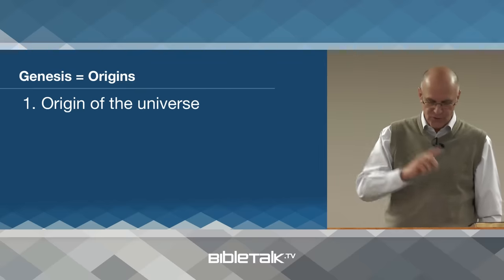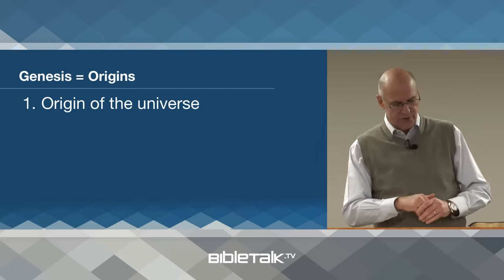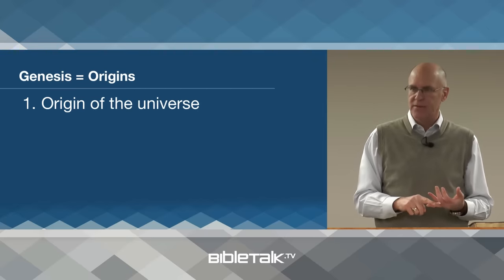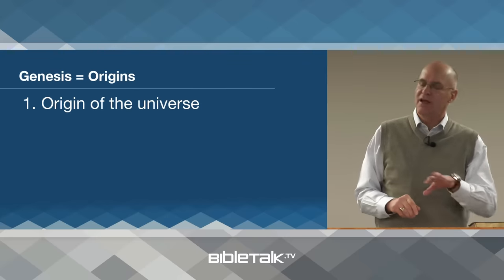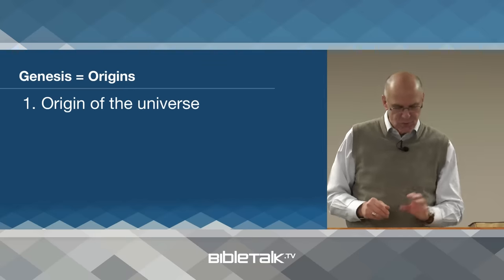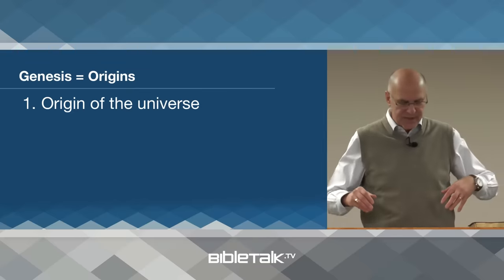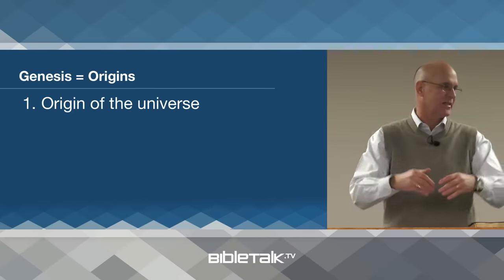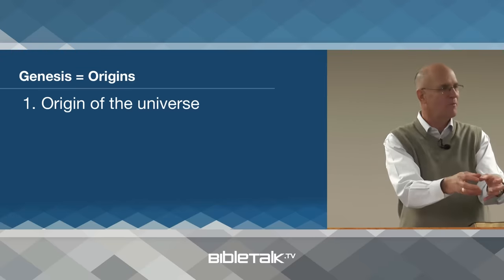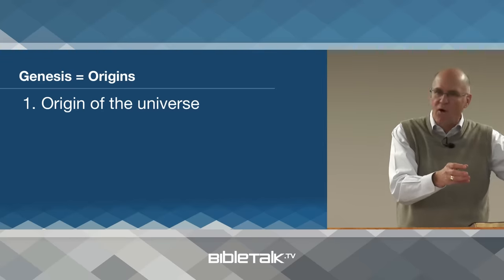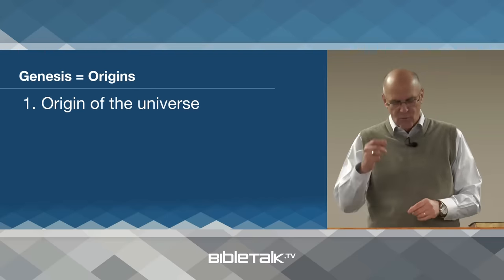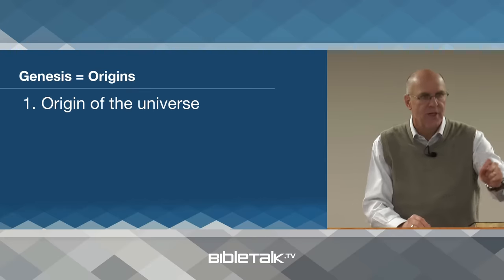Genesis origins — first origin: Genesis gives us the origin of the universe. Only the book of Genesis accounts for the origin of matter, space, and time. Every other religious system, every other scientific system or philosophy, begins with eternal matter or energy in some form that somehow developed into our present state. The theory of evolution starts with the Big Bang, but the Bible starts even before then. Where did the Big Bang come from? Only the Bible gives an account of where original matter actually came from.